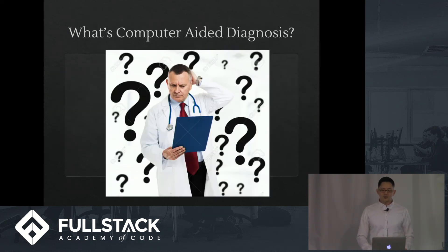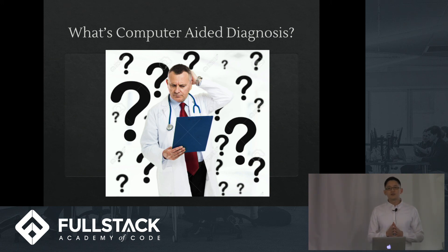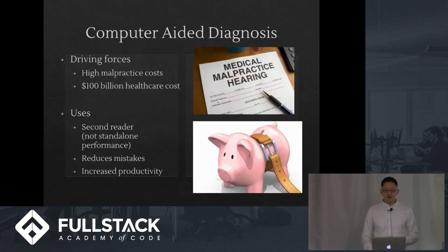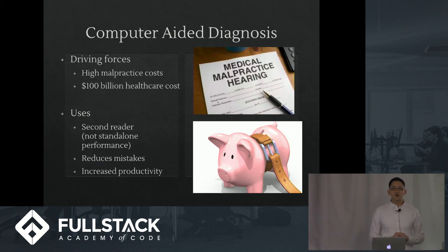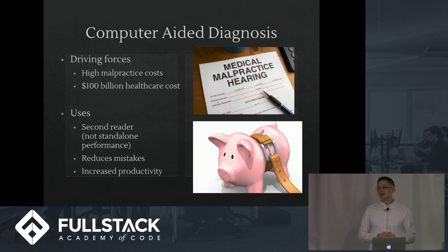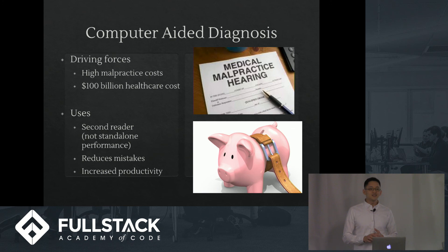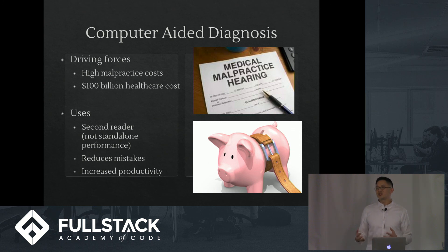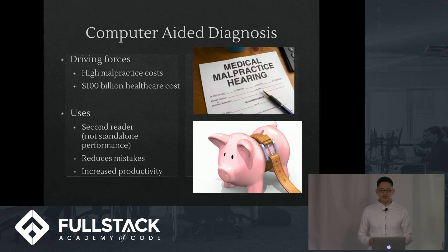So what is computer-aided diagnosis? It's the use of machine learning and other computer algorithms to help doctors figure out what's going wrong, particularly in radiology images. This all started back about 20 years ago when people were concerned about medical malpractice. Every time a doctor messes up, they're often sued for between one and three million dollars. So a lot of people were looking for ways to reduce legal costs — can we find a machine algorithm to help make the right diagnoses?